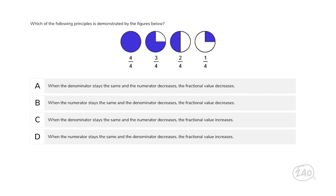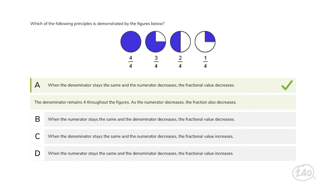On to competency 3 — let's hit them with some fractions. Which of the following principles is demonstrated by the figures below? The first thing I notice is that all the figures have the same denominator — the number on the bottom of the fraction. Looking at the shaded areas of each circle and the numbers they match up with, the best answer is: the denominator remains 4 throughout the figures, and as the numerator decreases, the fraction also decreases.